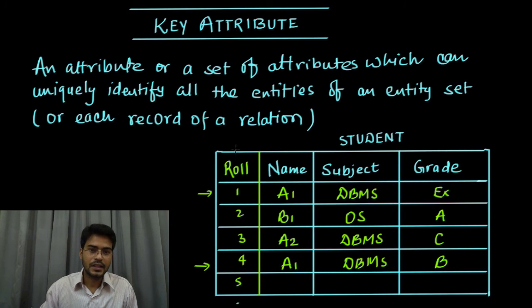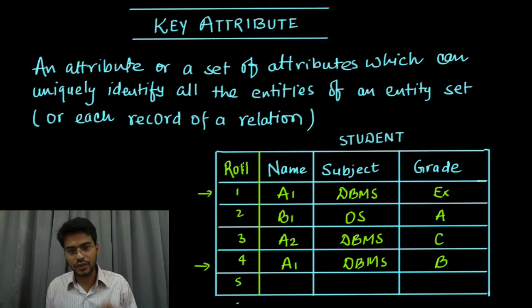Similar thing happens in all the cases where we need to have a user identification. For user identity, we have PAN numbers which is unique, we have driving license number which is unique, passport number which is unique. With this unique attribute, we can identify all the remaining attributes for that particular entity. This is the whole concept of key attribute.